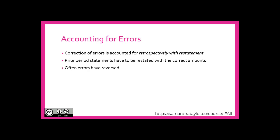Corrections of accounting errors are accounted for retrospectively with restatement. Prior period statements have to be restated with the correct amounts. Often, errors have reversed or cancelled themselves out by the time somebody notices them, and the current statements don't need to be adjusted. So keep in mind: if it is a reversing error and the item is already reversed, look at what the net impact to the ending retained earnings would be. Perhaps current period statements don't need to be adjusted. Something to keep in mind.